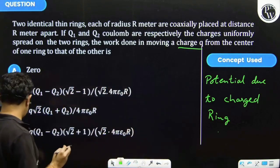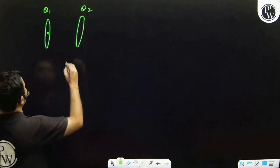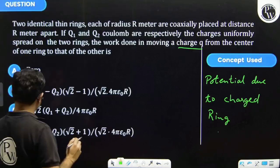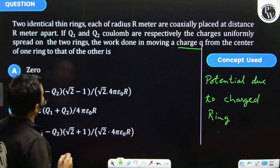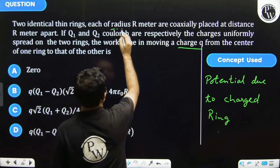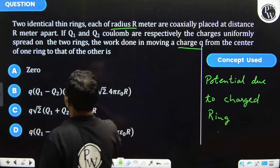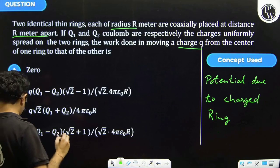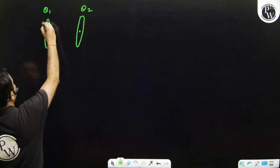The distance between the rings, each of radius capital R, and at a distance of R meter apart.